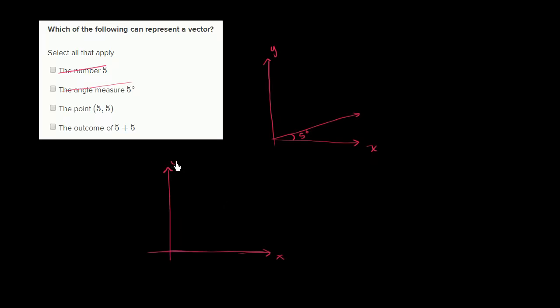So if that's the positive x-axis, positive y-axis. If this is, let's see, 1, 2, 3, 4, 5 in the horizontal direction.